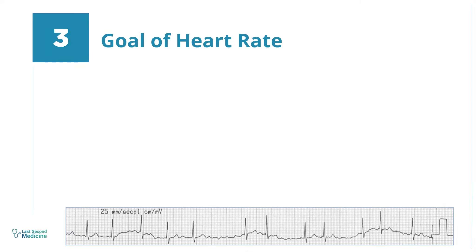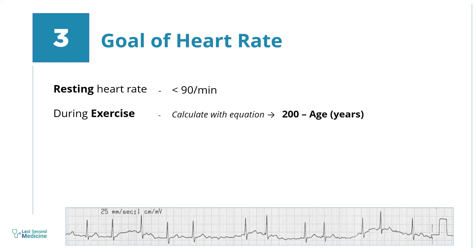Number 3. The goal of rate control is to keep the heart rate below 90 per minute at rest. And 200 minus age in years will be the maximum heart rate on exertion.